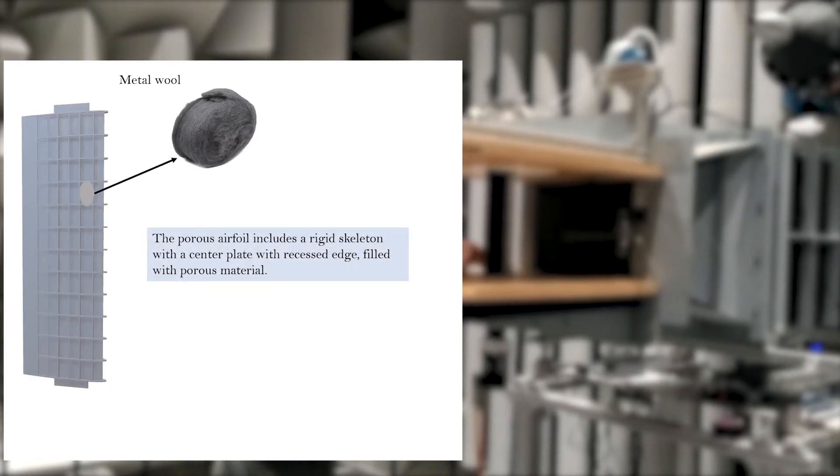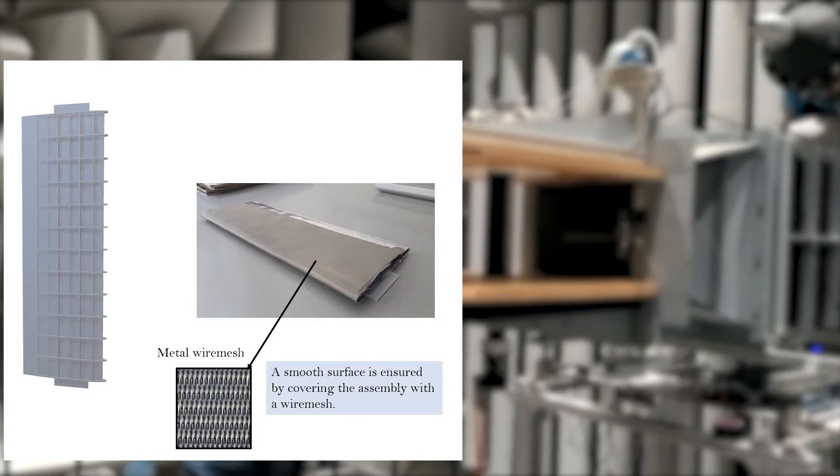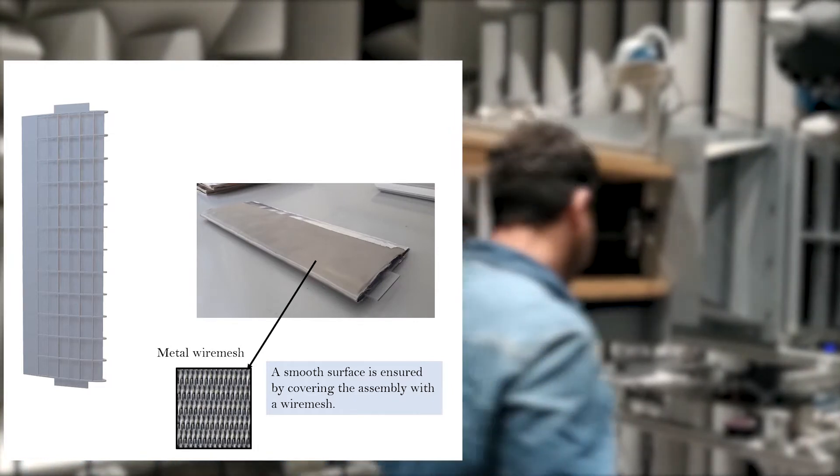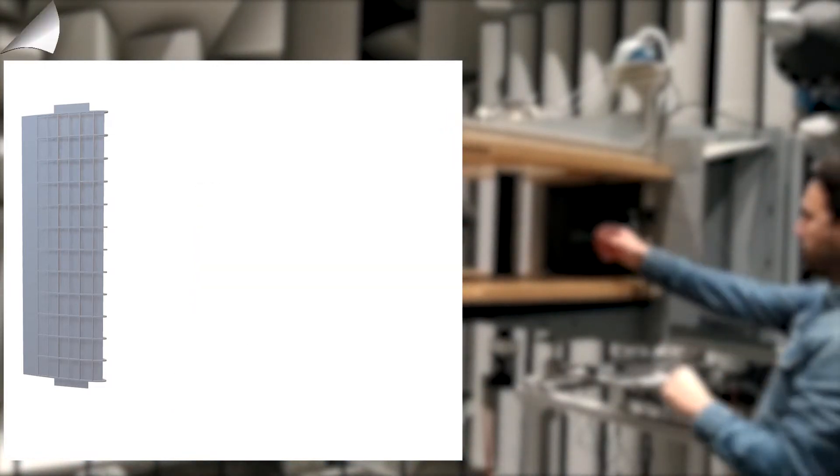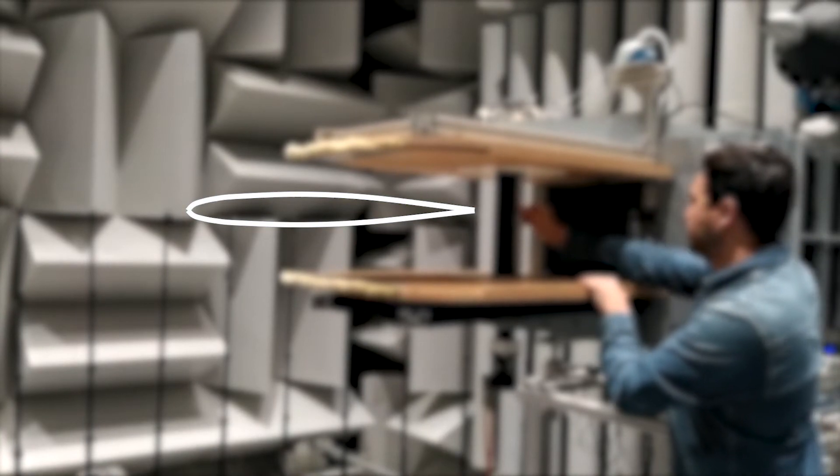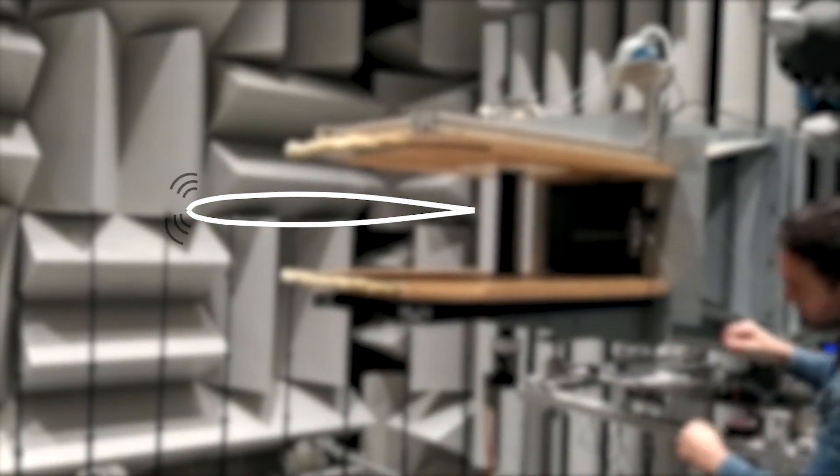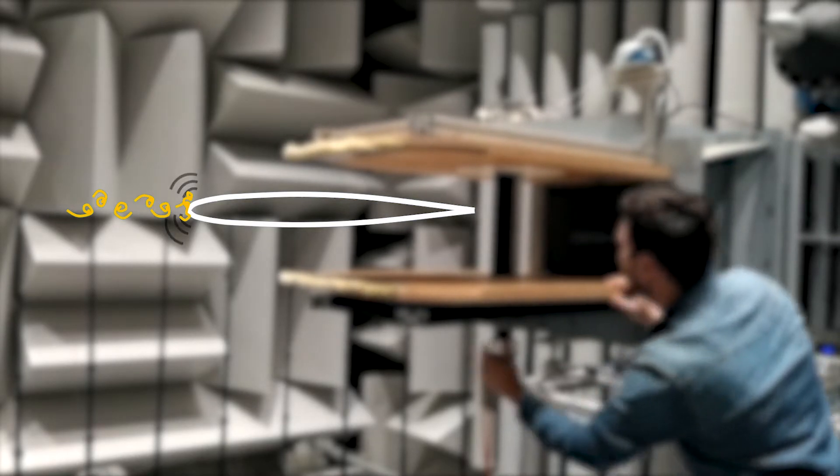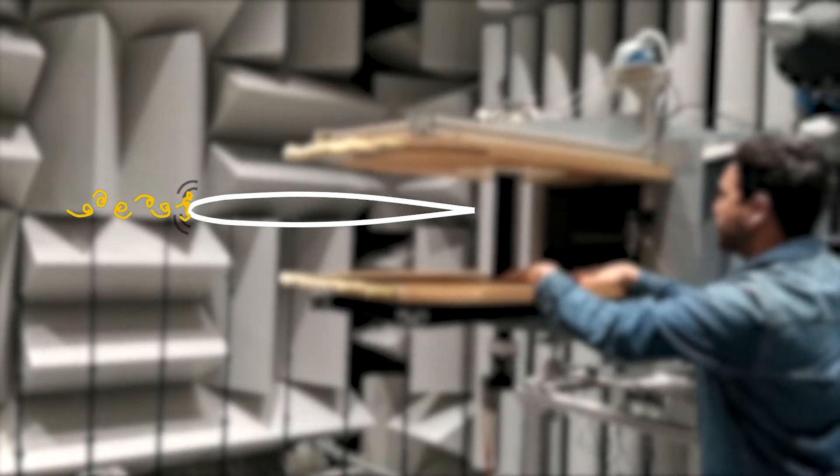The technology of the porous airfoil includes a rigid skeleton with a center plate with recessed edge filled with porous material. A smooth surface is ensured by covering the assembly with a wire mesh. The proposed structure aims to dissipate progressively the kinetic energy of the vorticity combining a proper penetration of the flow mostly related to the leading edge area and ensuring a smooth flow path.